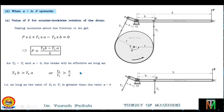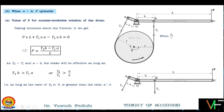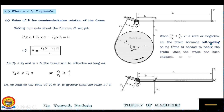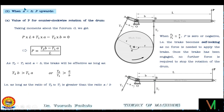If t2·b becomes less than or equal to t1·a, then P will be either negative or zero, so the brake will be self-locking. When t2/t1 ≤ a/b, P is zero or negative — meaning the brake becomes self-locking as no force is needed to apply the brake. Once the brake has been engaged, no further force is required to stop the rotation of the drum. So in this case (a < b, P acting upward), if t2/t1 ≤ a/b, this configuration will be self-locking.